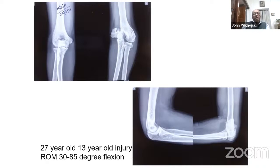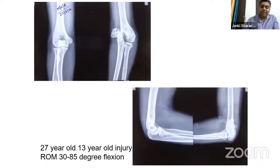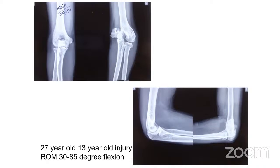The next case is a 27-year-old. It is a 13-year-old injury. Range of motion was 30 to 85 degrees. He had this injury when he was 14 or 15, was initially treated conservatively, but his parents said they couldn't afford further treatment. He was managing with 30 to 85 degrees of motion, able to work with that hand, but had pain when lifting anything heavy. Now he's in IT in Bangalore and wants something done.